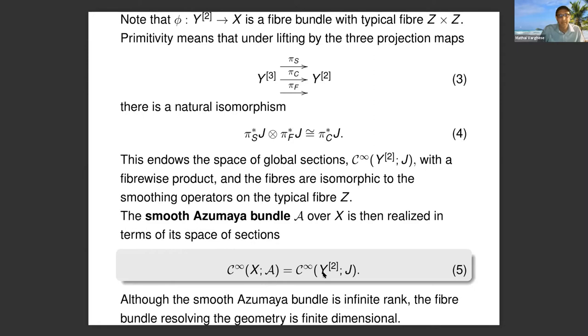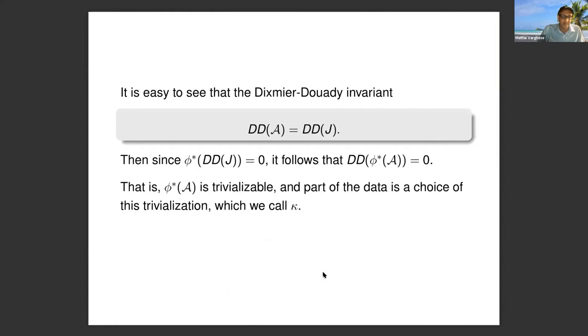The smooth Azumaya bundle is then realized in terms of its space of sections. So smooth sections of A is just smooth sections of J over Y squared. The Dixmier-Douady invariant is the degree three class, and it turns out that if you lift it to φ, it's zero in cohomology.